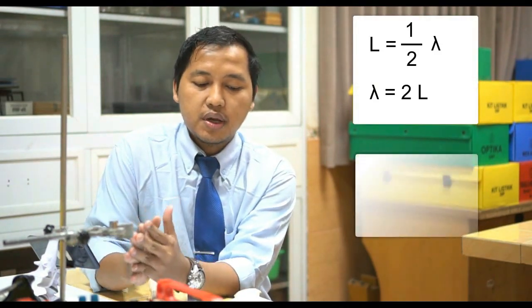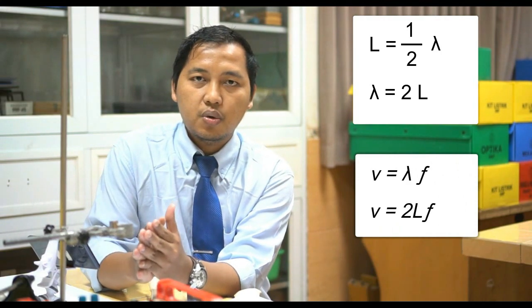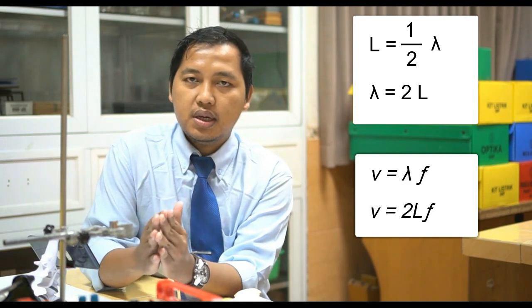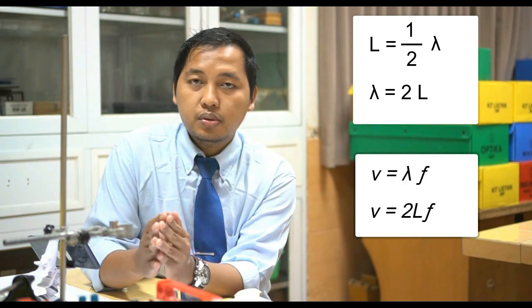If we have measured the frequency and the length of the air column, by applying the equation of the wavelength for the fundamental or first harmonic of open-end pipes, the length of the air column is equal to the half wavelength. By rearranging the equation — speed equals wavelength multiplied by frequency — we have: speed equals 2 multiplied by frequency multiplied by the length of the air column.